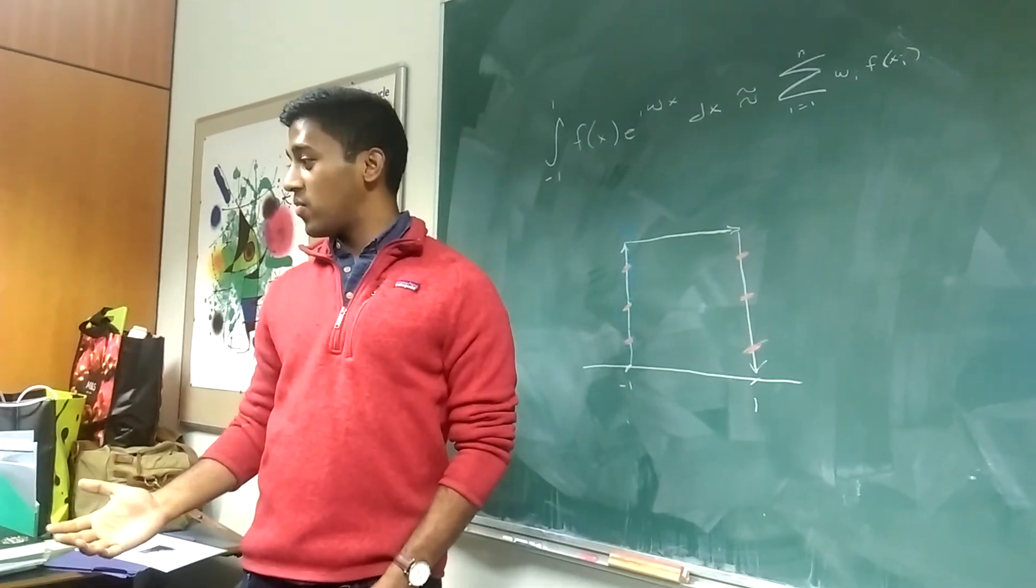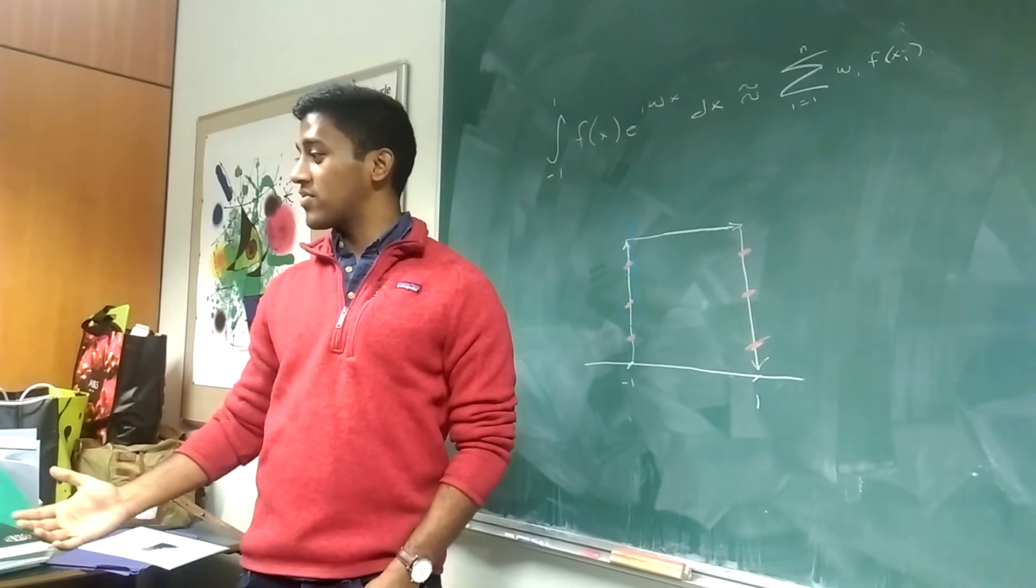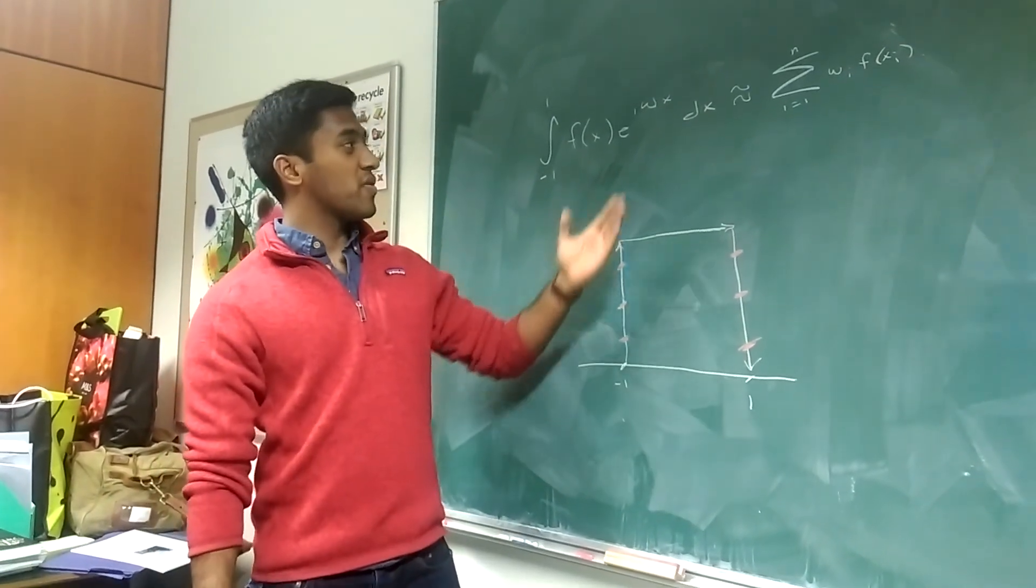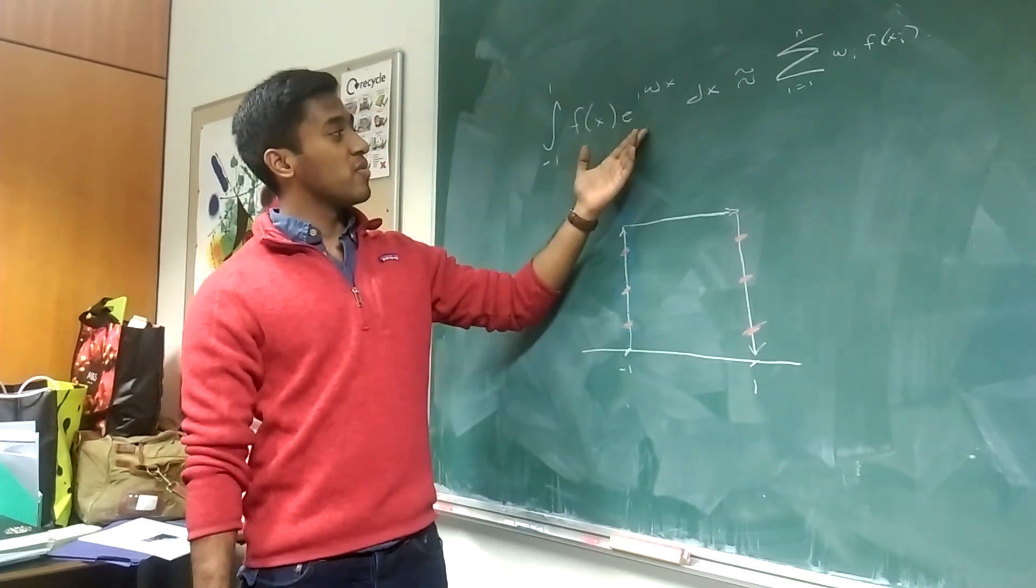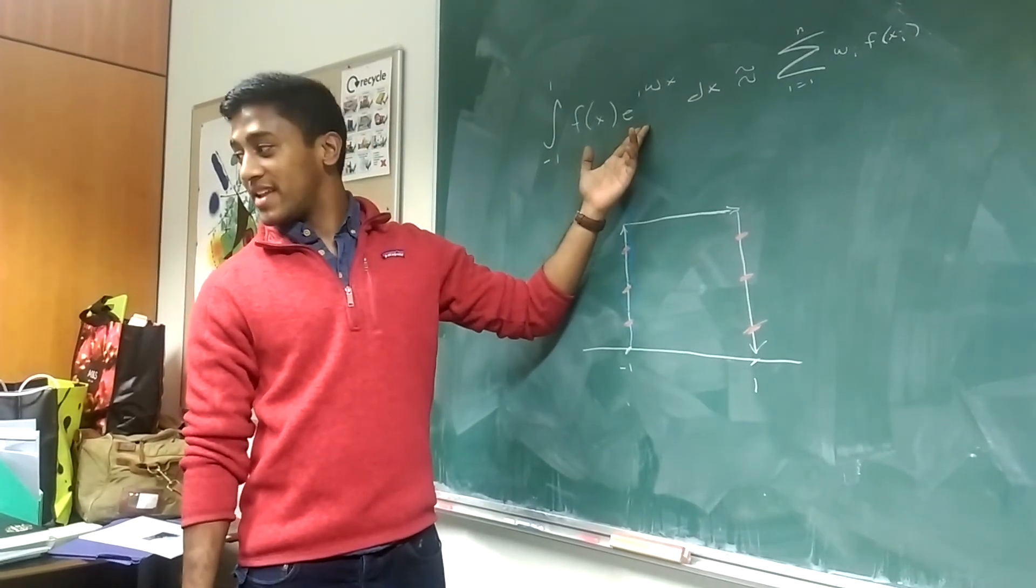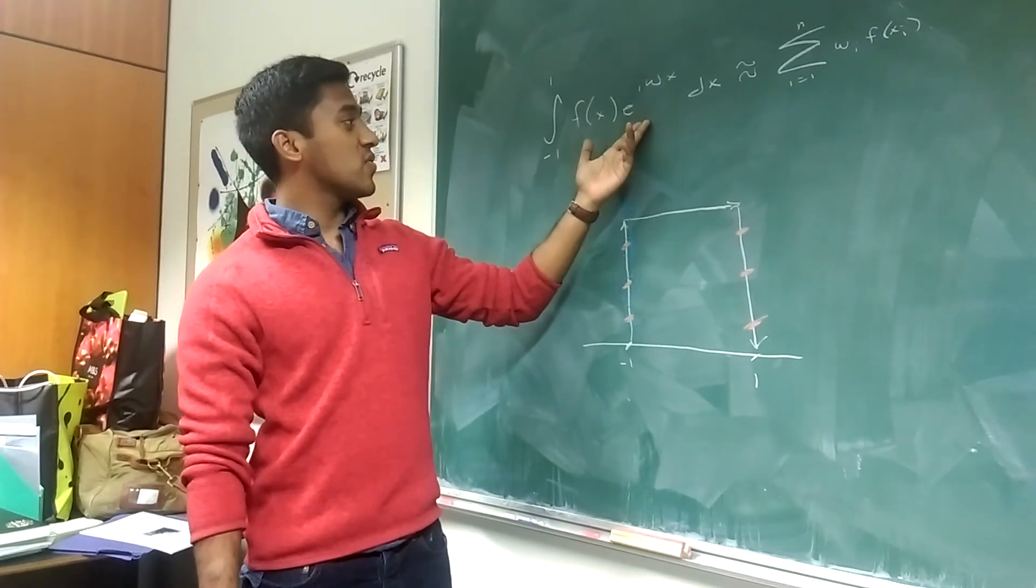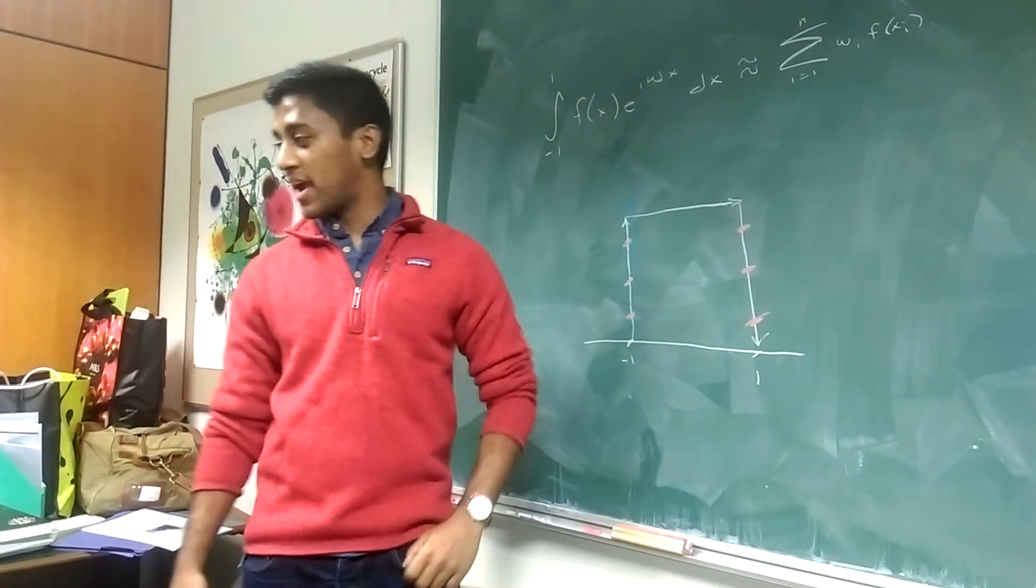I propose we use a different method, one that's universal, one that works well in both the small and large omega regimes. To do that, I say we take polynomials orthogonal to the wave e to the i omega x and use the zeros of these polynomials to do a Gaussian quadrature rule.